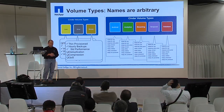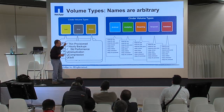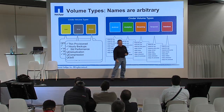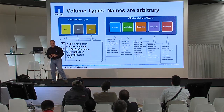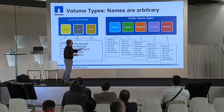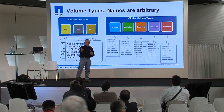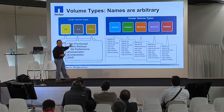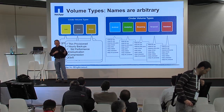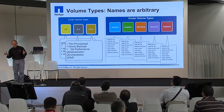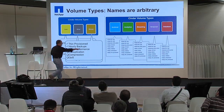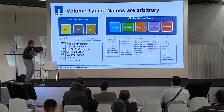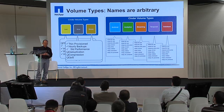Another example would be using different volume types for a database or an enterprise CRM application that you want in the cloud requiring very high-end storage. The names are arbitrary — the volume types can be however you need them to be, and that's the great flexibility of OpenStack as a cloud administrator. Not all of this is just NetApp — some of this is available in the base cinder driver today, so there's information you can take back and use even with a non-NetApp OpenStack deployment. The NetApp storage features include thin provisioning, deduplication, and compression.